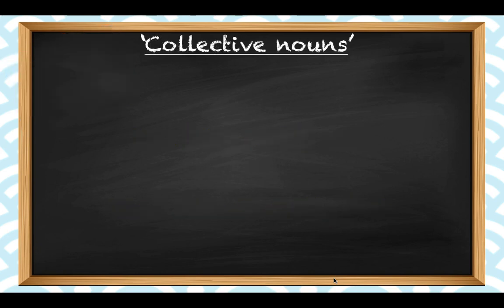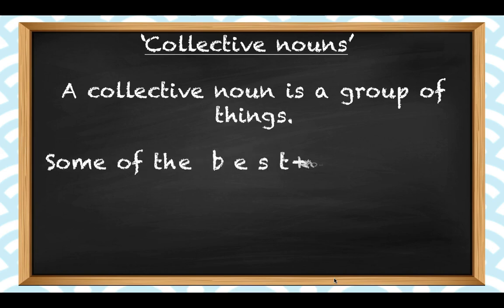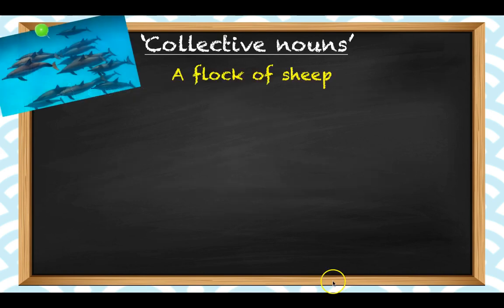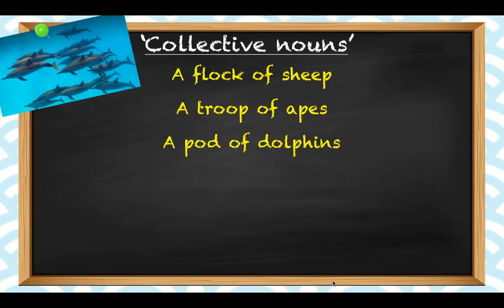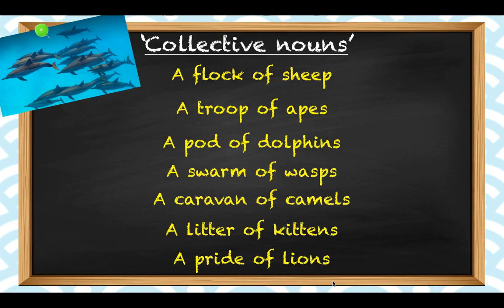And finally, collective nouns. A collective noun is one that describes a group of things. There's a huge variety of collective nouns. A team, for example, refers to a group of people playing sport together or working together. But some of the best known collective nouns refer to animals. Here are some examples: a flock of sheep, a troop of apes, a pod of dolphins, a swarm of wasps, a caravan of camels, a litter of kittens, and a pride of lions.